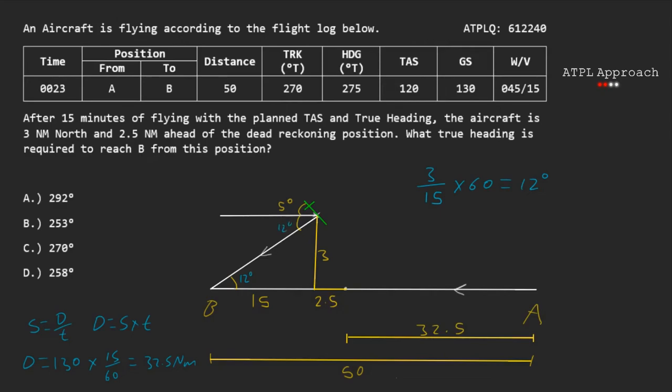This means that the total angle is the sum of the 12 and the 5, which gives us 17 degrees. And in order to now get our corrected heading, we do our true heading minus these two angles, which gives us an answer of 258 degrees.